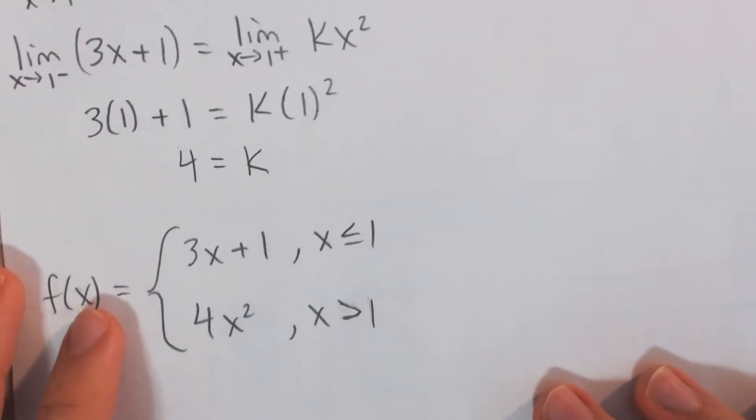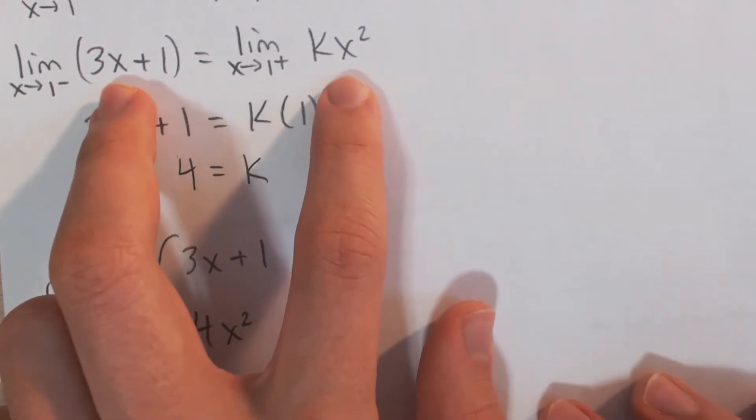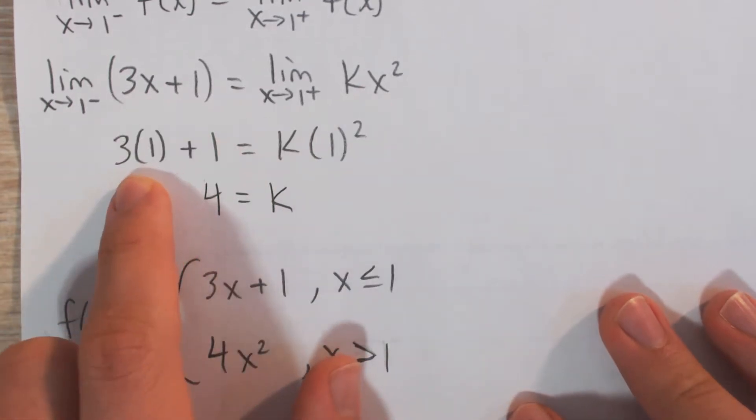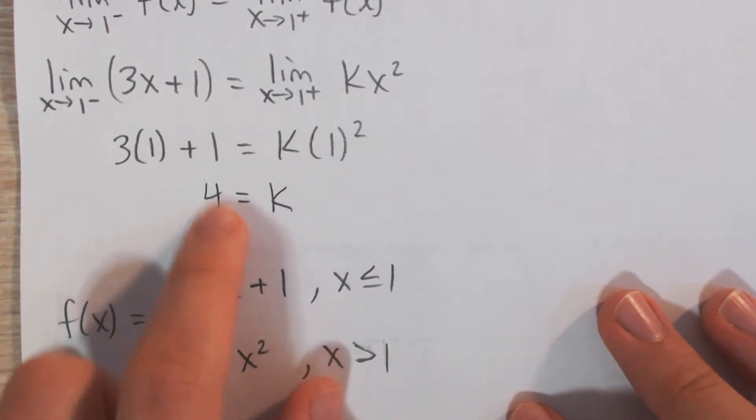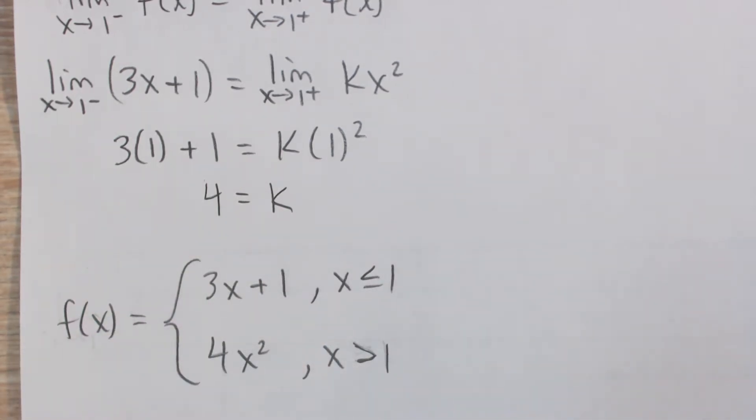And so now we want to find these limits, and it's actually pretty simple, because they're just linear and quadratic, we can just plug in the values of 1. So plug in 1 on the left, we get 3 times 1 plus 1, that's 4. Plug in 1 on the right, and we get k. And so we can actually see right here, without any algebra manipulation, that k is equal to 4.